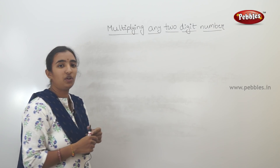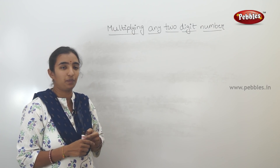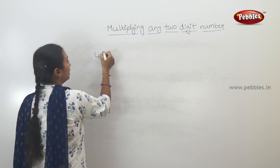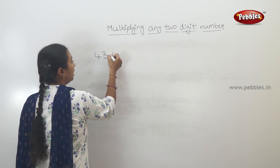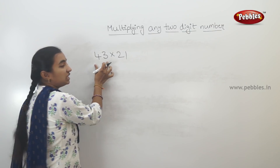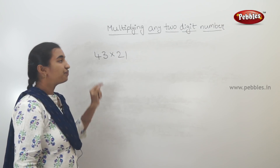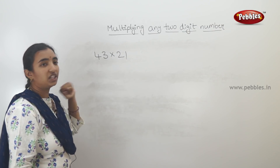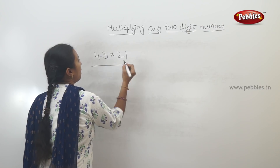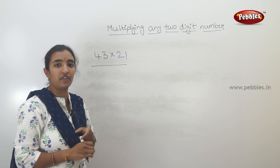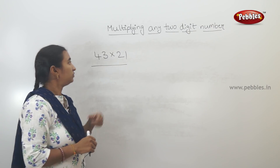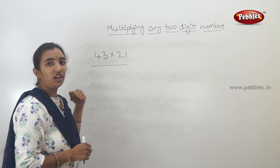Now let's discuss this example. Suppose the first example is 43 into 21. Now, these are two two-digit numbers. If you multiply the same way, we will use a shortcut method.